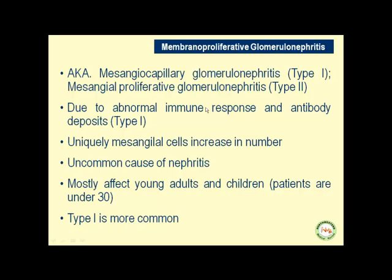All three types of MPGN may have either idiopathic or familial predispositions. Type 1 is due to abnormal immune response and subendothelial and mesangial antibody and immune complex deposition. In both type 1 and type 2, mesangial cells increase in number. Mesangial cells occupy a central position in the renal glomerulus — they are modified smooth muscle cells that produce cytokines and prostaglandins.